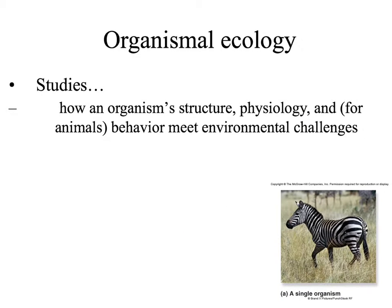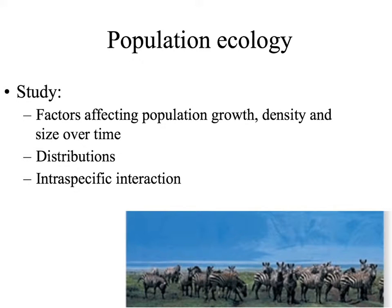Organismal ecology often studies an organism's structures, physiology, and behaviors, and how those help the organism meet the environmental challenges it must face. Population ecology studies factors that affect the population's growth, density, and size over time. We can look at distributions — how the organisms are spread out in their environment — as well as intraspecific interactions, those between individuals of the population.